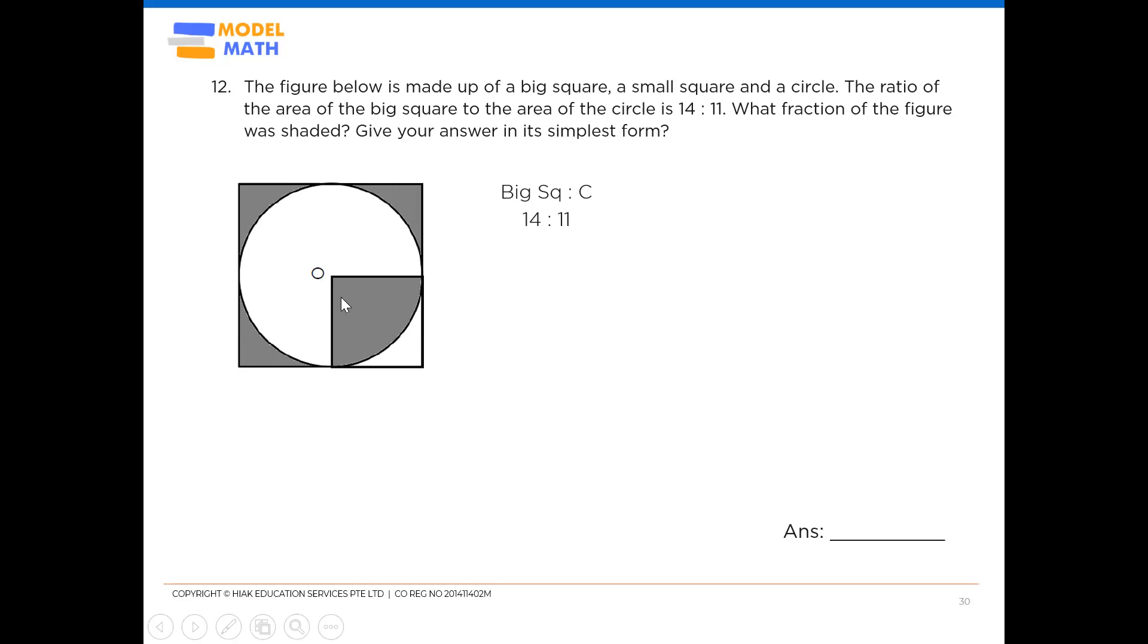So with this information, we can now go on to create one more ratio. Quadrant to the whole circle, and quadrant to whole circle will be 1 is to 4. Now with this ratio created, notice that you can now work out a common base between both of these ratios. I hope you can tell that the common base will be C, the circle. So 11 U and 4 U, make them into 44 units. Underline your common base.